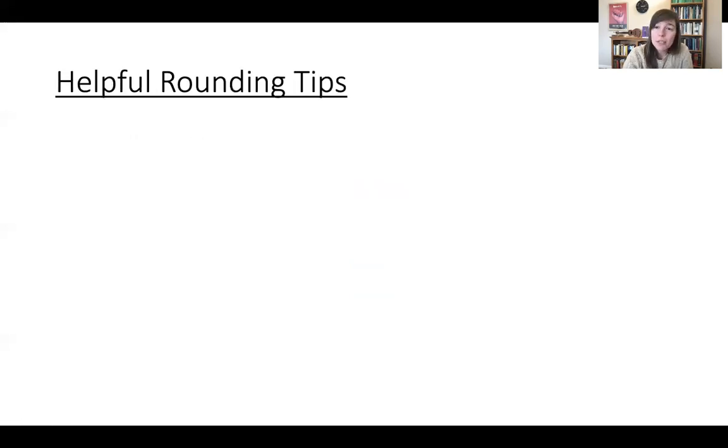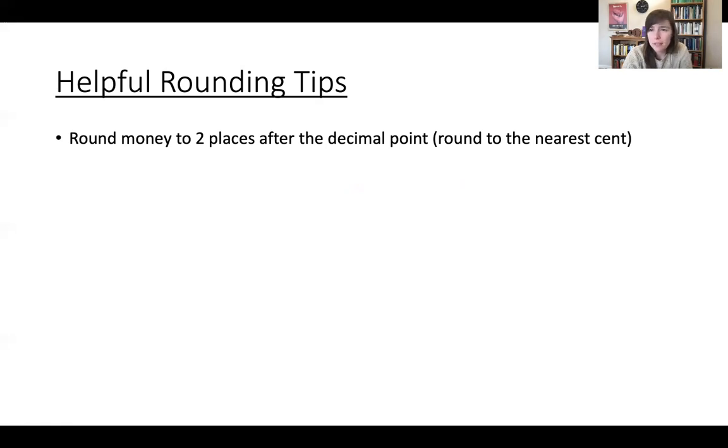And I just want to end with some helpful tips for rounding. One, if we're talking about money, pretty much always round to two places after the decimal point, like round to the nearest cent, basically. If we're talking about dollars or something, don't include six decimal places after the decimal, unless I maybe tell you to. I mean, maybe I'll give you something that originally has a lot of decimal places, but don't just immediately round. Do all your calculations, and at the end, round to two decimal places.